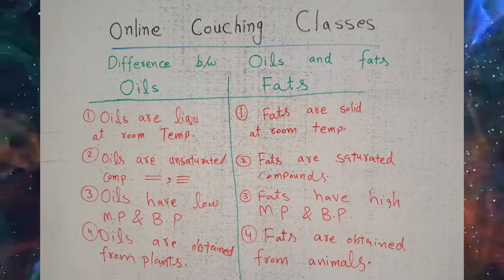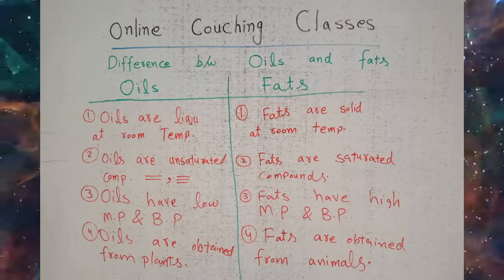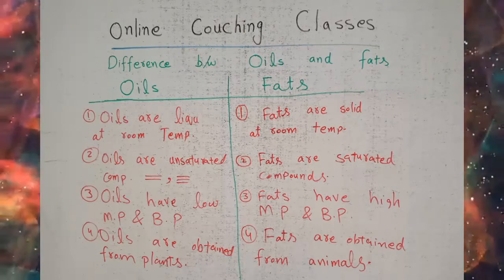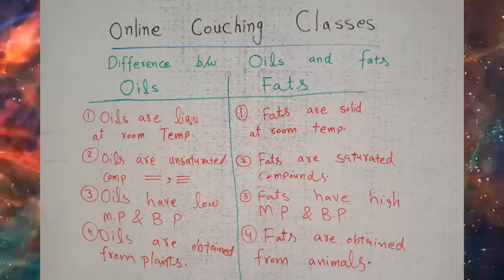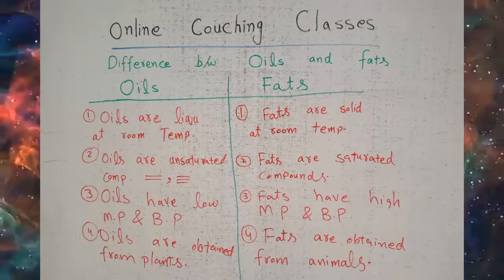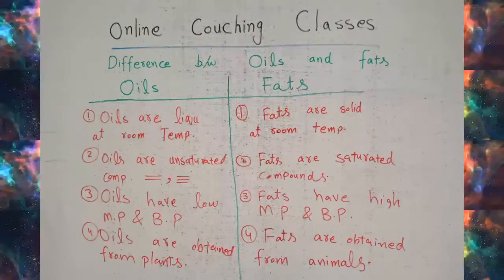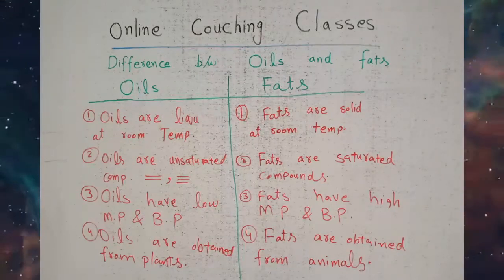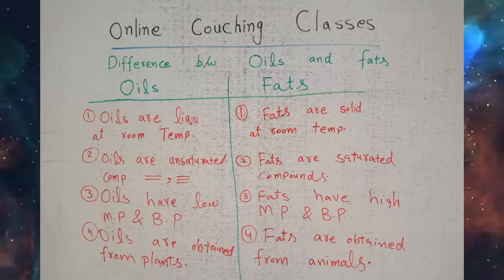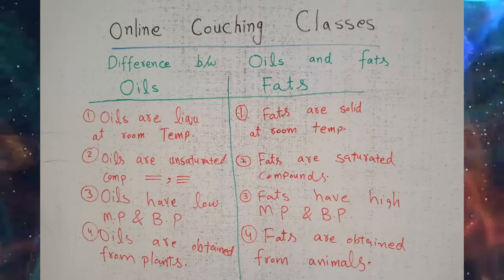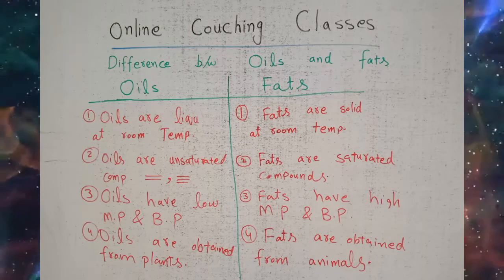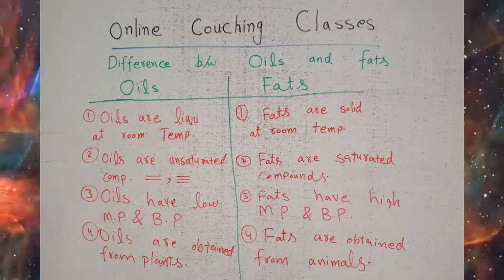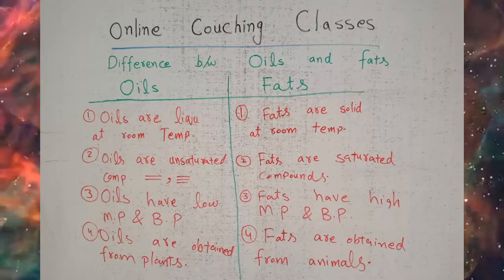Difference three: oils have low melting and boiling points, but fats have high melting and boiling points. Difference four: oils are obtained from plants, but fats are obtained from animals.